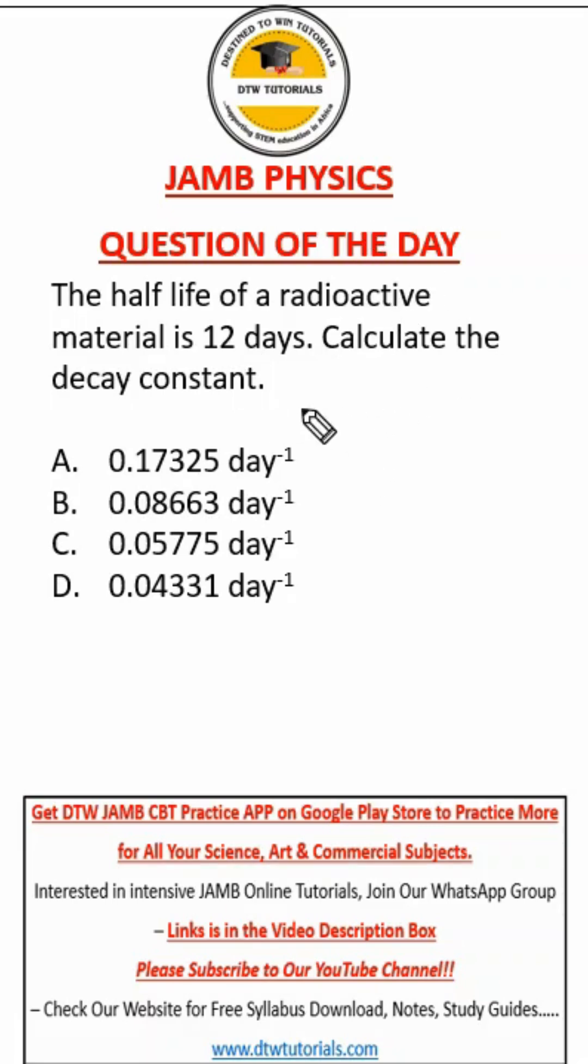Now let's look at this JAMB Physics question. It says the half-life of a radioactive material is 12 days. Calculate the decay constant. I hope you remember the formula for decay constant. Decay constant is equal to 0.693 over the half-life.